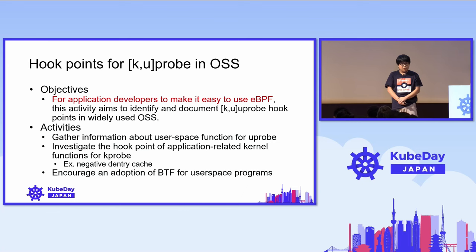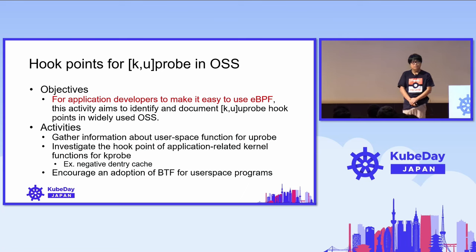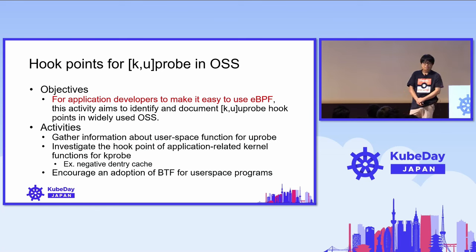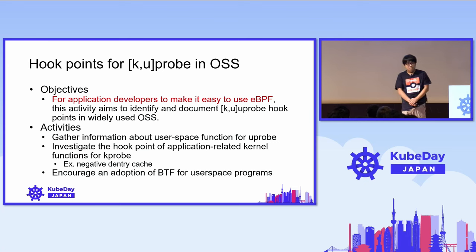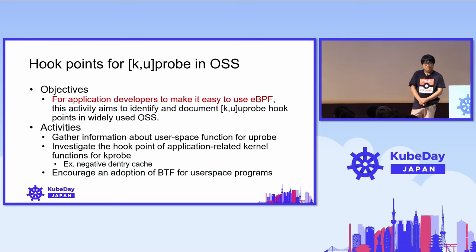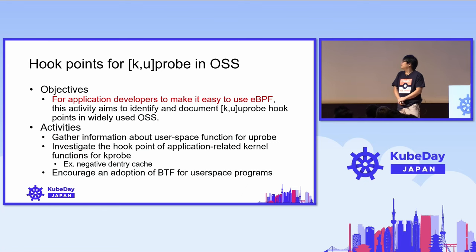In addition, we have started investigating k-probe and u-probe hook points in widely used open source software, with the goal of making it easier for application developers to use eBPF. First, we gather information about user space functions for u-probes. Some tools support USDT, but not all tools do. We also investigate the hook points of application-related kernel functions for k-probes — for example, failed filename lookups in user space that increase the number of negative dentry caches. We need to understand kernel behavior in user programming to change the kernel behavior.